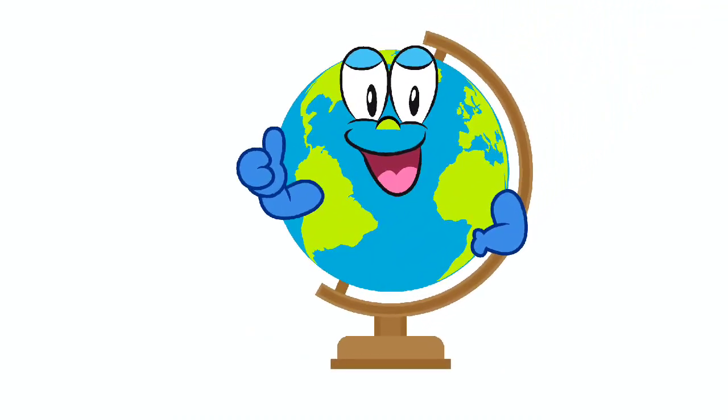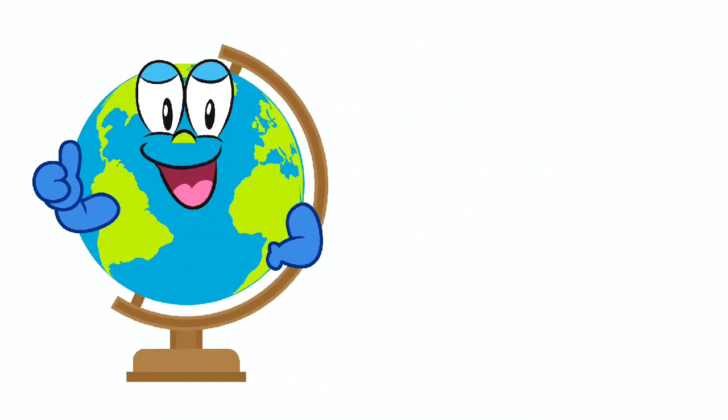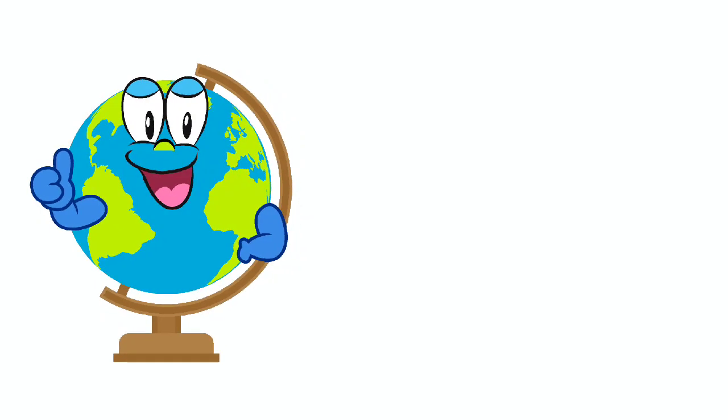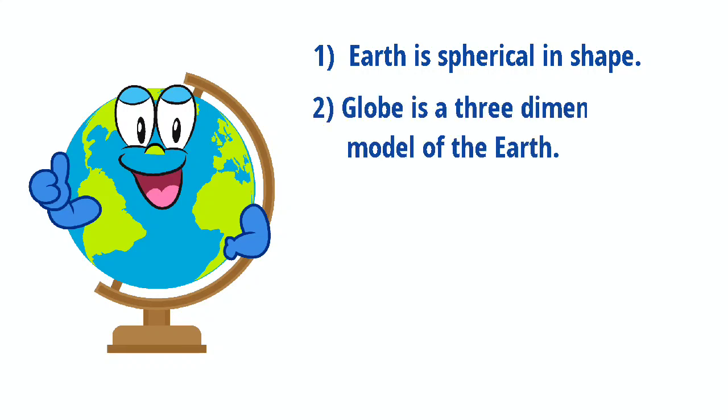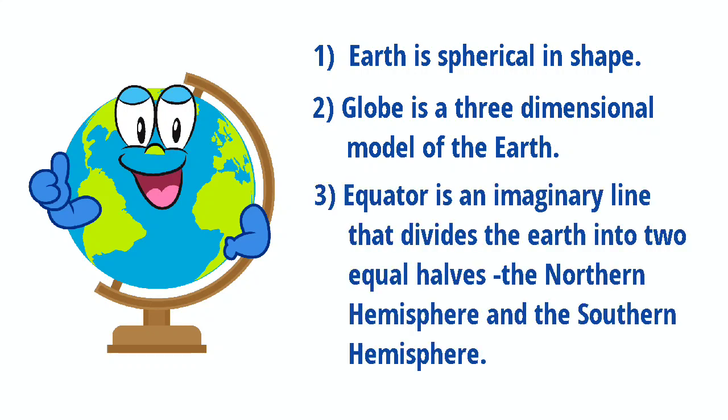So children, I am winding up for now. Let's recall the contents once more. We studied about the Earth. The shape of the Earth is spherical or geoid, and about the globe, which is a three-dimensional model of the Earth, and about equator. What is equator? It is an imaginary line that divides the Earth into two equal halves, northern hemisphere and southern hemisphere.